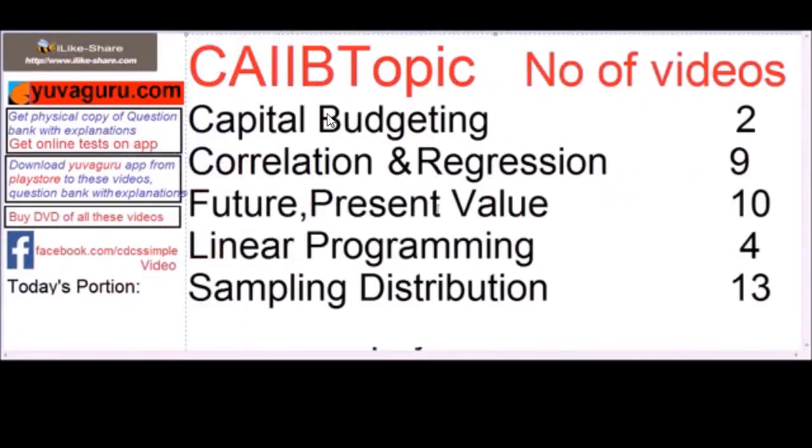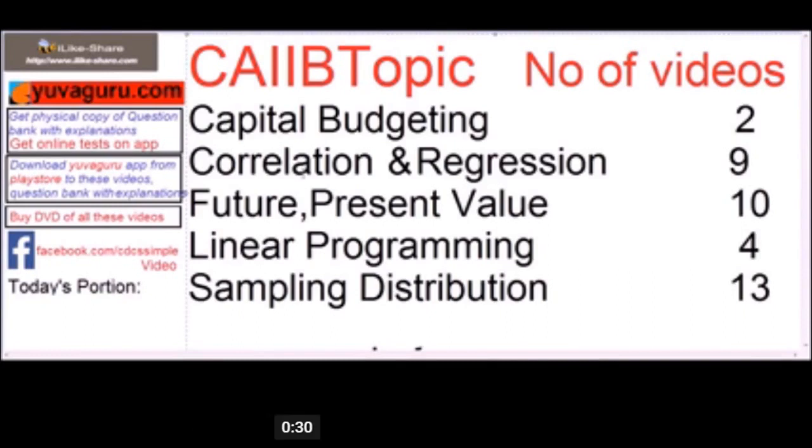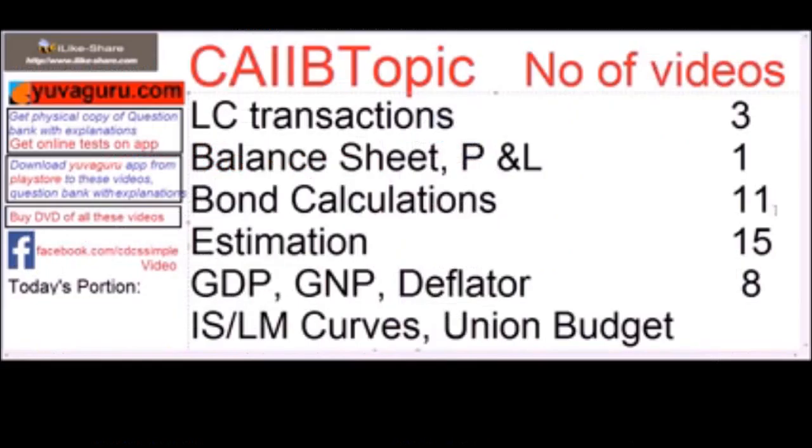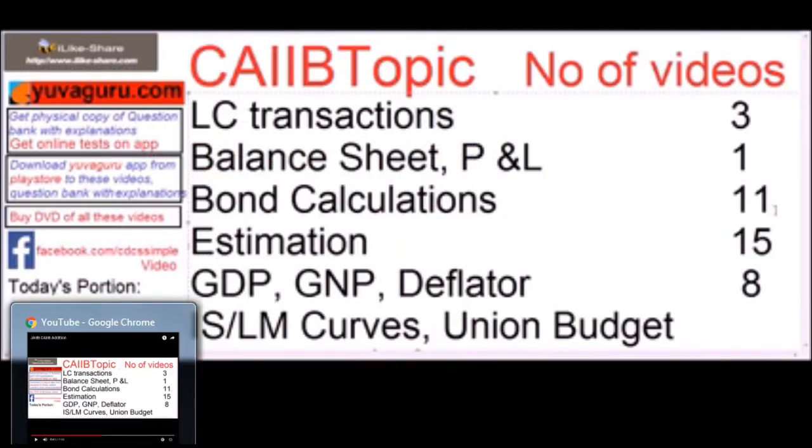See, these are the topics and the videos for CAIIB: capital budgeting, correlation, future present values, linear programming, sampling distribution, balance of trade, ultimate score, buyer's credit, supplier's credit, call and put options, ECGC, factoring, LC transactions, balance sheets, P&L.